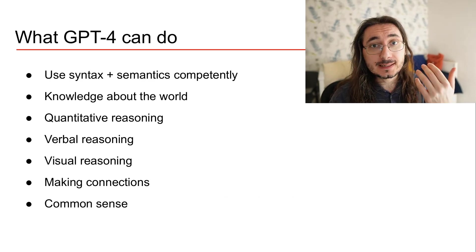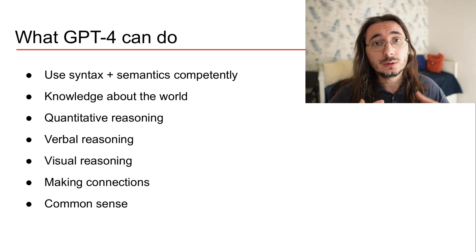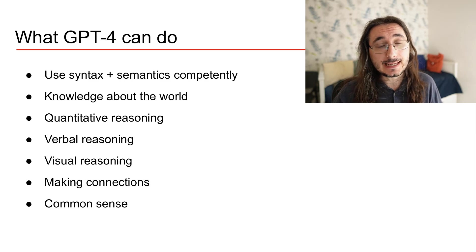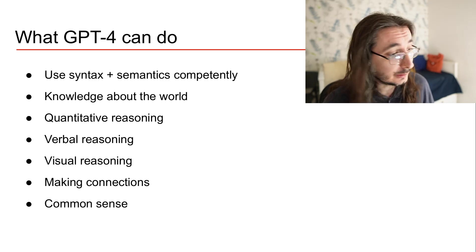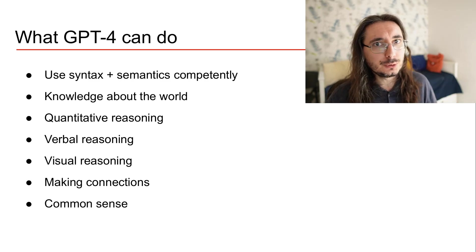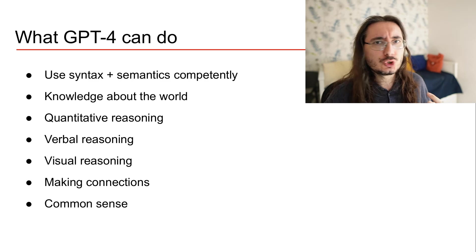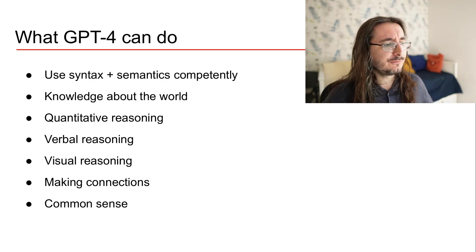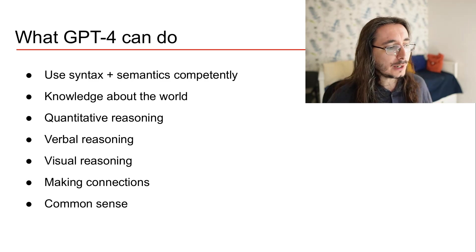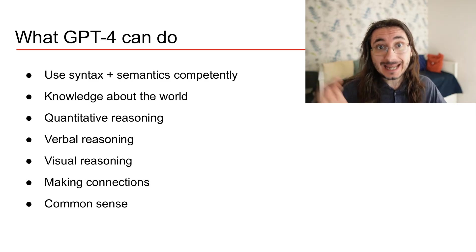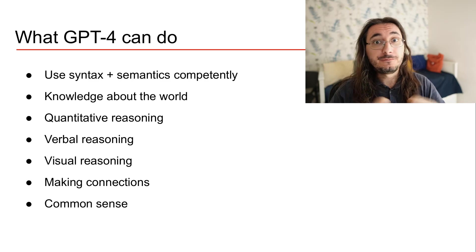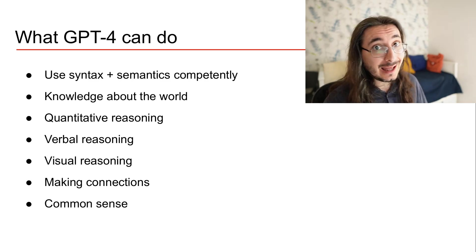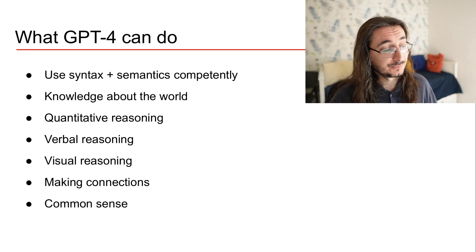Summarizing GPT-4's capabilities: the model uses semantics and syntax really well to create text, it has clear knowledge about the world, and it can reason about the world. It can do quantitative reasoning, verbal reasoning, and visual reasoning quite well. It can make connections between things across domains that are far apart, and it has common sense.